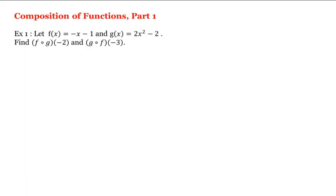Let's look at composition of functions. Let f of x equal negative x minus 1, and g of x equal 2x squared minus 2. Let's find f composed with g evaluated at negative 2, and g composed with f evaluated at negative 3.